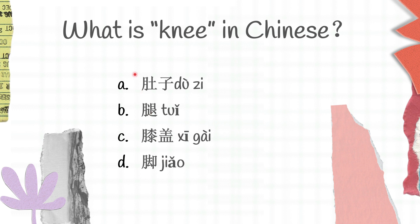Duzi is belly, tui is leg, xīgài is knee, jiǎo is foot. So knee in Chinese is C, xīgài.